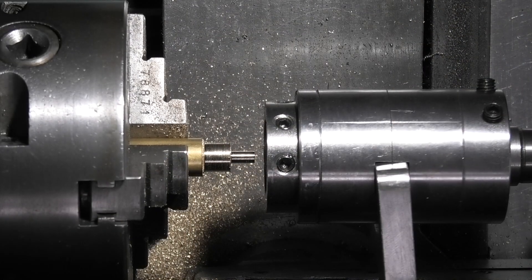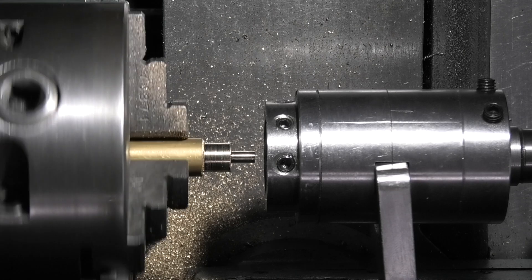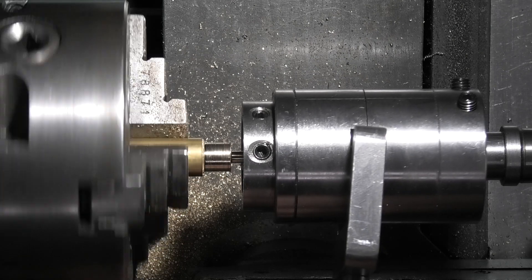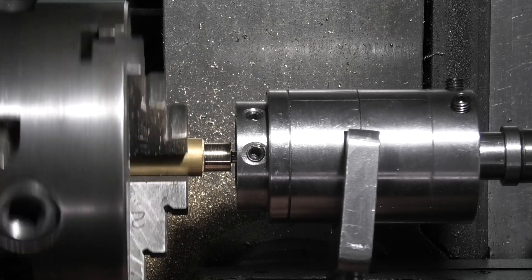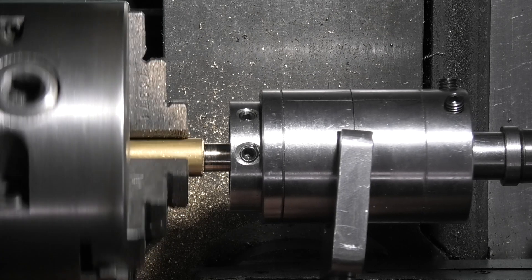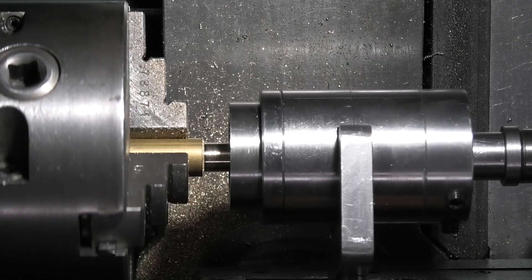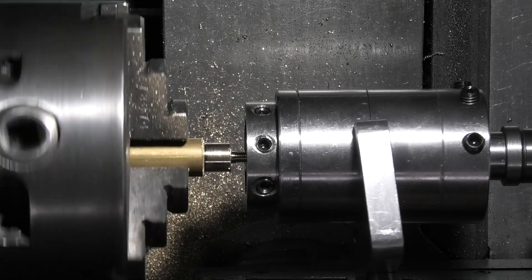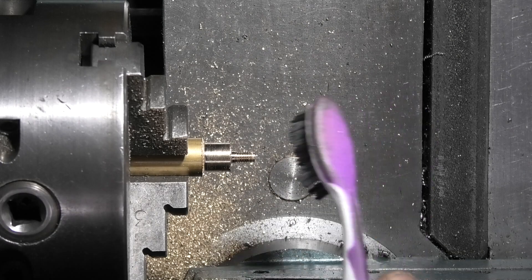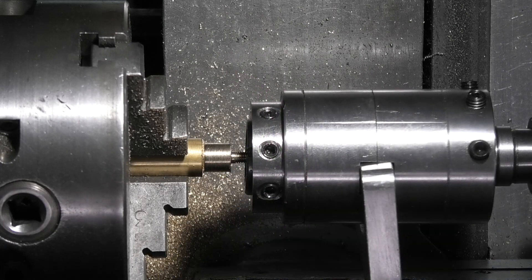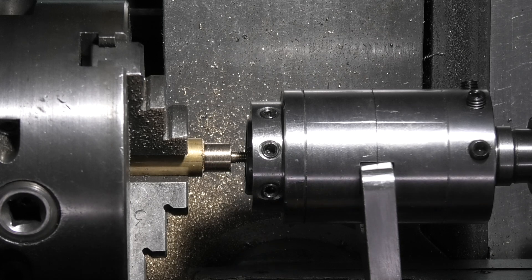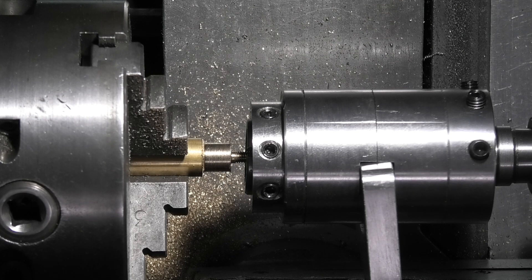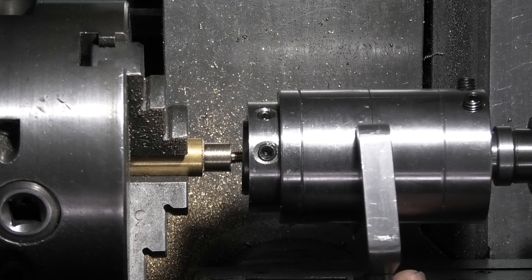Thread this now M4. Let go. Reverse. Now because I want the thread right up to the end, you can see it stopped about an eighth of an inch from the end. I've turned the die around and I'm hoping to be able to go back on there and go back up to the end.